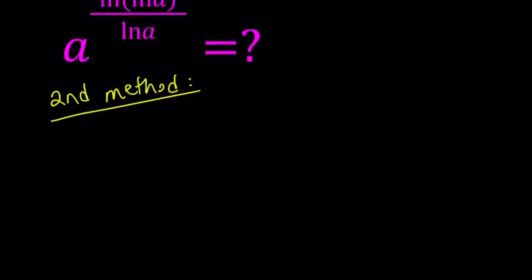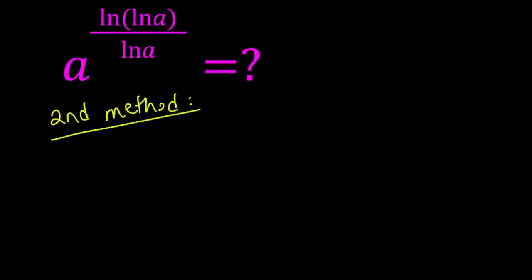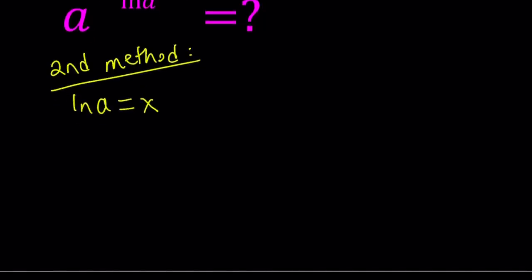My second method basically involves substitution. I'm going to call ln a something — how about ln a equals x? Now, since ln means log with base e, by using the definition of logarithms, I can write this as a equals e to the power x.